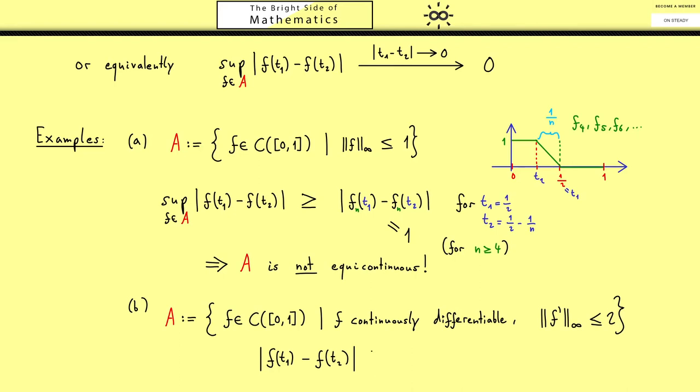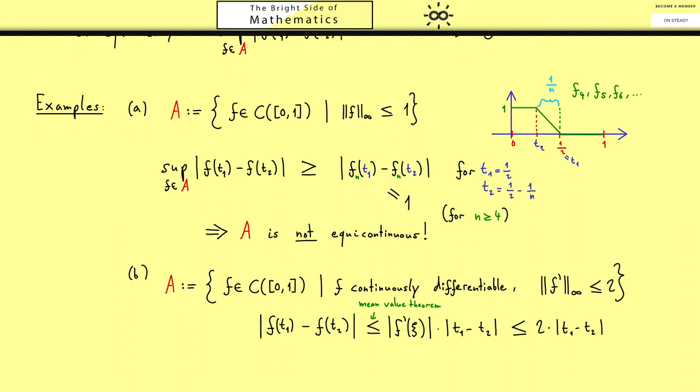Then we can take a function f from A and calculate the difference of the images. And here knowing that f is continuously differentiable we can apply the mean value theorem. So it's less or equal than f prime at a position between t1 and t2 and usually you call it psi times the difference between t1 and t2. Now knowing that the supremum norm of f prime is less or equal than 2 we know that this thing is always less or equal than 2. Hence we get a better estimate out here which is 2 times t1 minus t2.